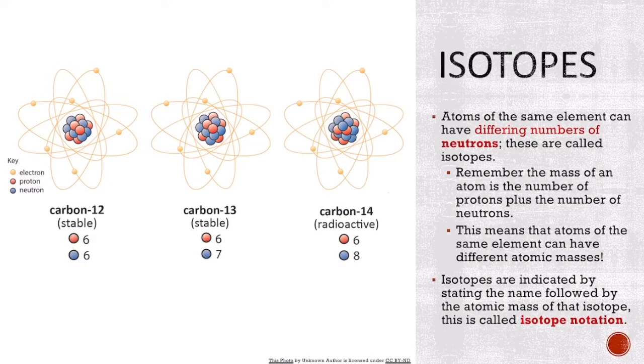Atoms of the same element can have different numbers of neutrons, and these are called isotopes. Remember, the mass of an atom is the number of protons plus the number of neutrons. This means that atoms of the same element can have different masses.